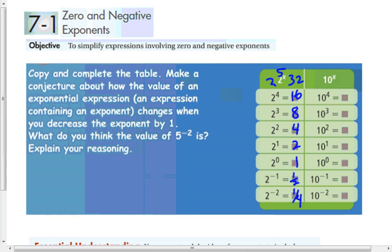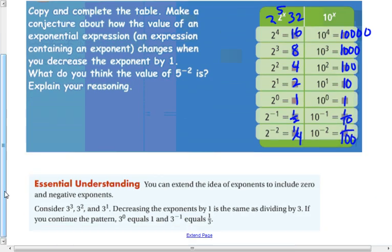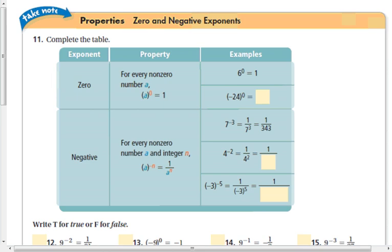You'll notice in both of these problems: 10 to the fourth is 10,000 and 10 to the third is 1,000 — I'm just dividing by 10 each time. So 10 to the zero is 10 divided by 10, which is 1. Any number to the zero power is 1. Starting there, a negative first power is dividing that 1 by the base one time, and a negative second power is dividing by that base two times, giving us one-hundredth.